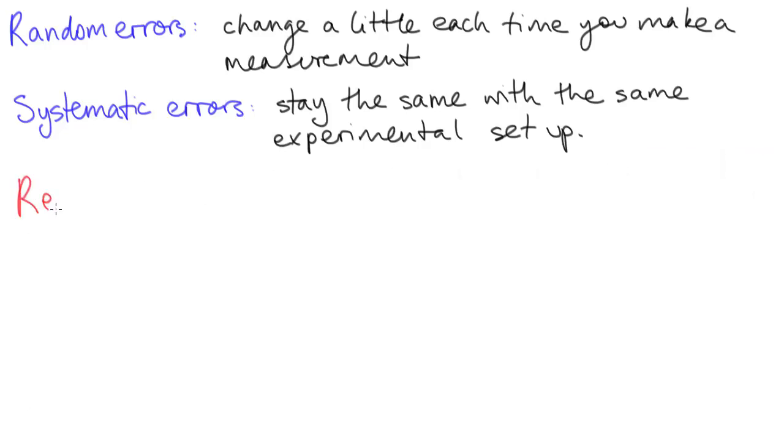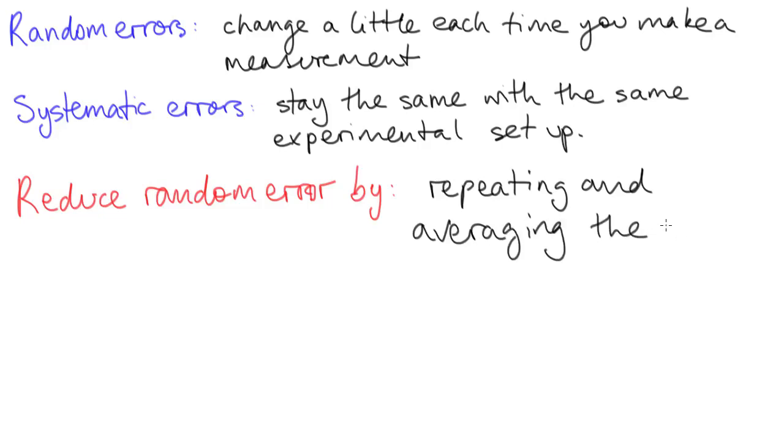Random errors tend to fluctuate around the true value. So one way to reduce random error is to repeat a measurement many times and then take an average of those values, and many small random errors will cancel out overall.